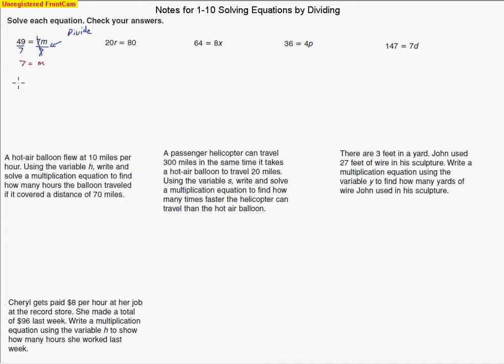Now we can check our answer by substituting that 7 back in for m. Let's see if it does work out. 49 equals 7 times 7. Well, 7 times 7 is 49. So when the two numbers equal, then we know we did it correctly. So 7 is the value of m.